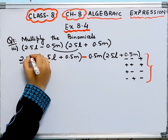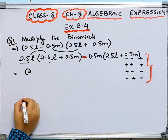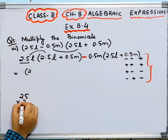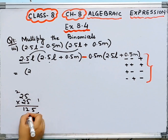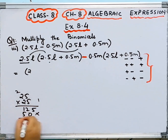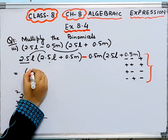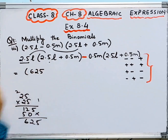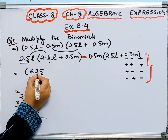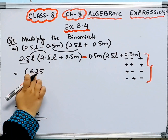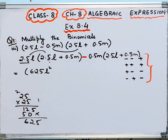Multiply 2.5L by 2.5L: 25 times 25 is 625. Counting decimal places — 1, 2 — so 2 digits after decimal, giving 6.25. And L times L gives L squared. So this term is 6.25L squared.